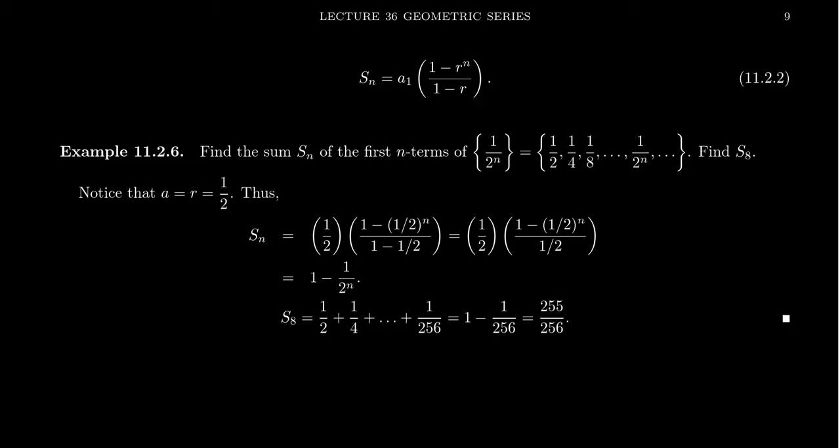All right, so let's look at an example of this. Let's find the sum, S_n, the geometric sum of the first n terms of a geometric sequence, 1 over 2 to the n, where our sequence looks like 1 half, 1 fourth, 1 eighth. We'll just take powers of 1 half. Let's find the general formula. Well, in this geometric sequence, notice that the first term is 1 half. We're going to plug that in for our A_1 right there.